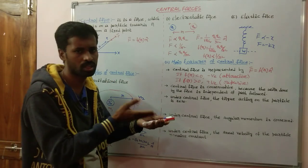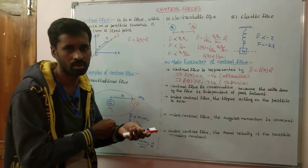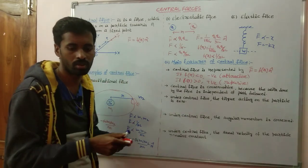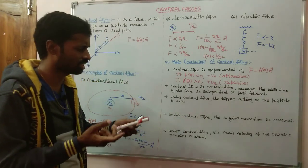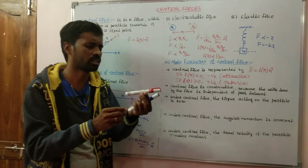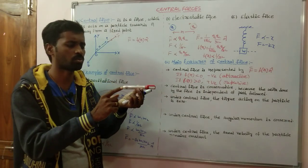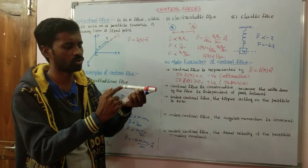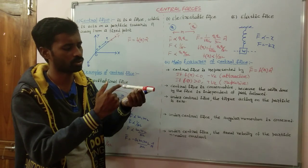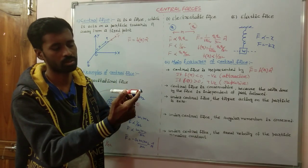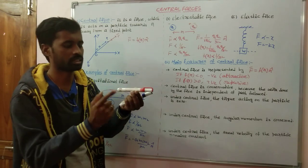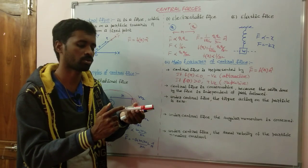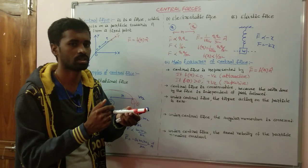When a force is applied on an object and it displaces, some work will be done. That work done is independent of the path followed. Let us see this: consider one point and another point. We go from one point to another by one path, and by a second different path.